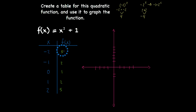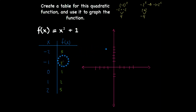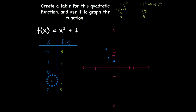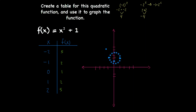When x is negative 2, y is positive 5 — so negative 2, positive 5, somewhere around here. When x is negative 1, y is 2. When x is 0, y is 1. When x is positive 1, y is 2 — notice here that my y value corresponds to the y value for negative 1. And finally, when x is positive 2, y is 5.